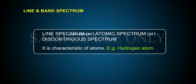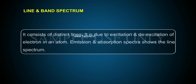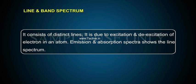Line spectrum, also called atomic spectrum or discontinuous spectrum, is characteristic of atoms — for example, hydrogen atom. It consists of distinct lines. It is due to excitation and de-excitation of electrons in an atom. Both emission and absorption spectra show the line spectrum.